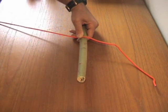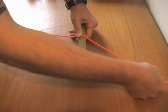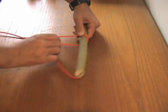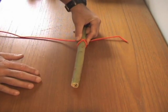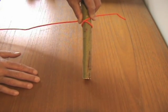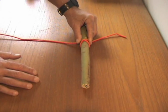Again, this is the long end, the short end. You make the cross like you did with the clove hitch.